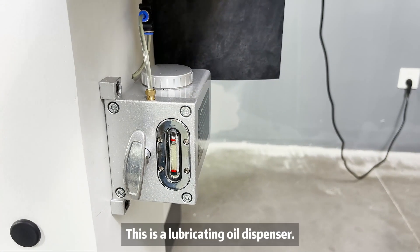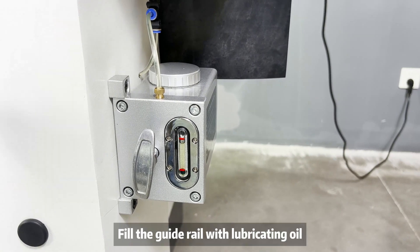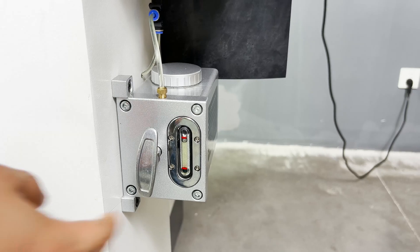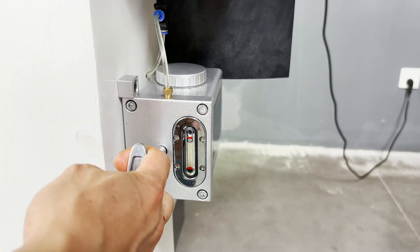This is a lubricating oil dispenser. Fill the guide rail with lubricating oil. Just pull it forward and it will automatically rebound.